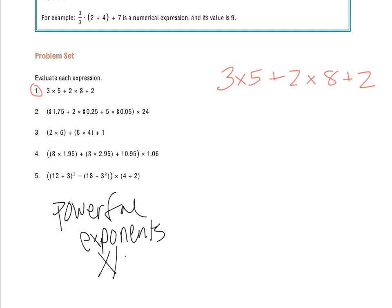Then multiplication and division come in the same step because they work hand in hand together, and then addition and subtraction follows. We look for grouping symbols first, then do anything powerful inside: exponents first, multiplication and division second, addition and subtraction third. We always work left to right when we do this.